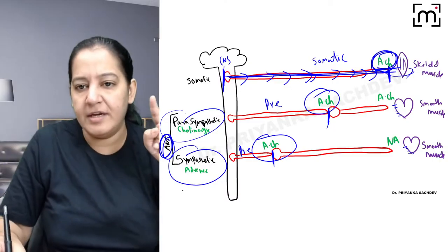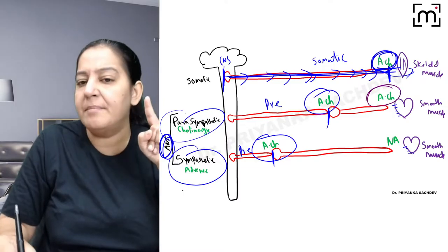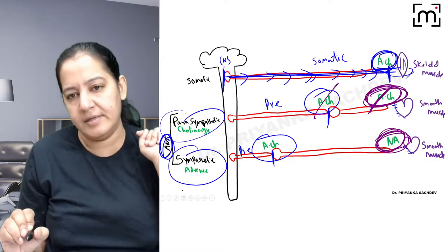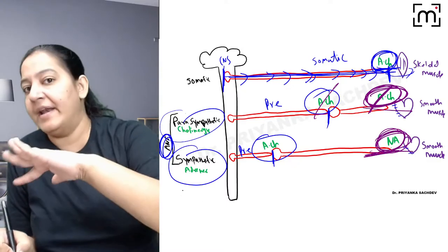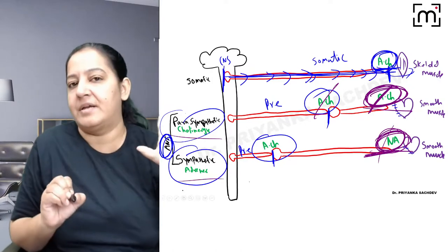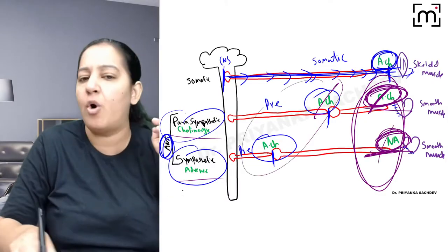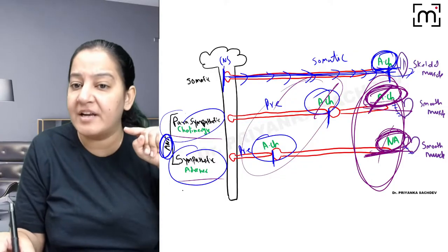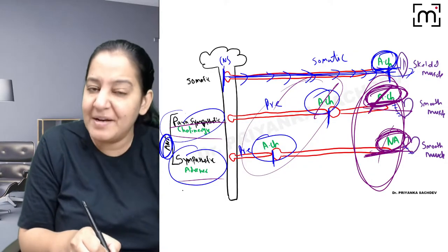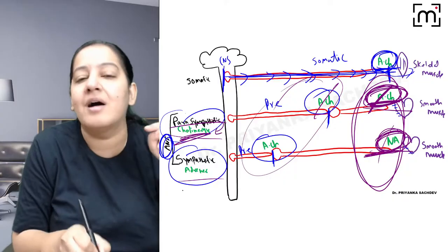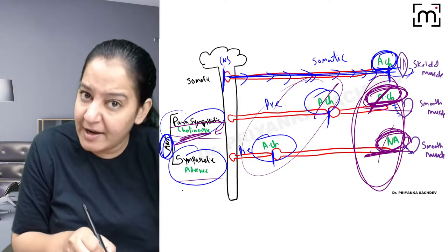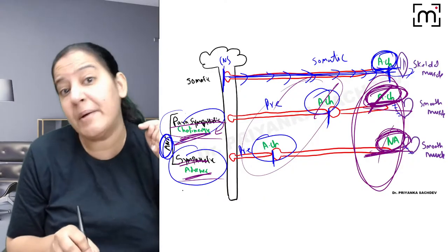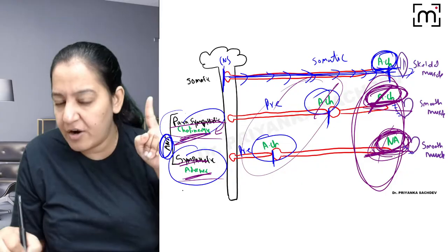Based on the post-ganglionic neurotransmitter at the organ level — which is different in both systems — we differentiate them. If the post-ganglionic neurotransmitter is acetylcholine, it is the parasympathetic system. That is why parasympathetic is known as the cholinergic system. If the post-ganglionic neurotransmitter is noradrenaline, it is the sympathetic system — that is why sympathetic is known as the adrenergic system.